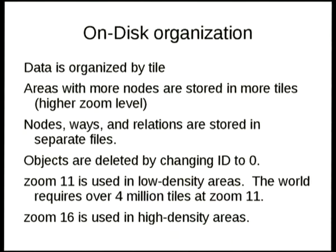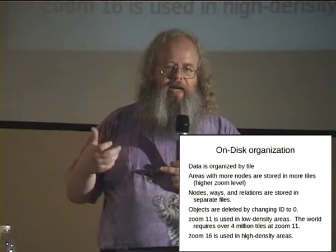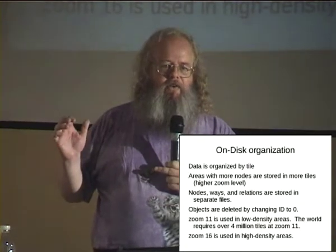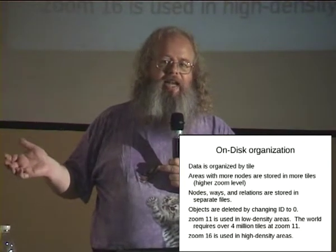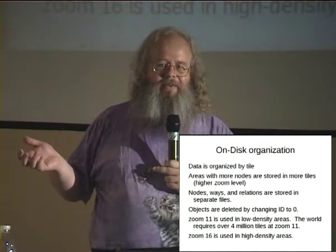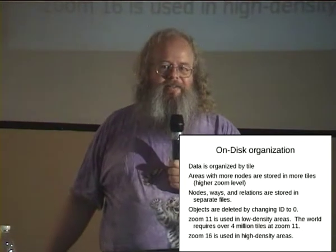On disk, I'm organizing the data by tile, where a tile is a group of data in an area of latitude and longitude. OpenStreetMap uses Mercator projection for making maps, so I'm using the projection subroutines already available. Areas with more nodes are stored in more tiles — I'm not using one size of tile for all of the world. In areas that are mostly sea there's very little data of interest, while the center of London has a lot of data. So to somewhat equalize the size of data groups, I'm varying the tile size.